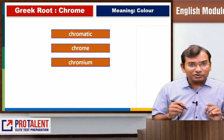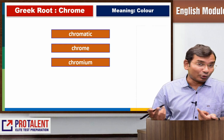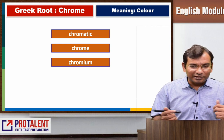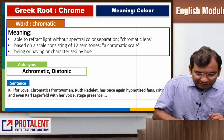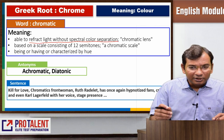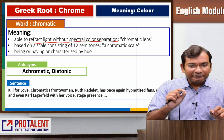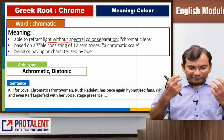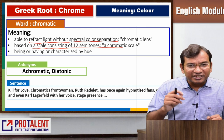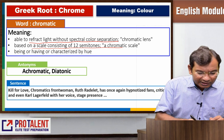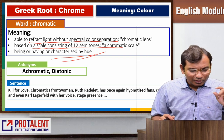Next root is called Chrome. Chrome means color. From there you have the word chromatic. Chromatic means able to reflect light without spectral color separation, so chromatic lenses are available that reflect light without color separation, giving you a perfect view. It is also based on a scale consisting of 12 semitones, called the chromatic scale. Chromatic also means having or characterized by hue. So chromatic relates to color.